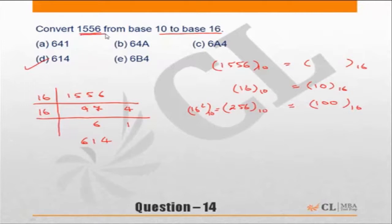This number 1556 is about 6 times 256. If you look at the choices, all choices start with 6. So 256 times 6 on base 10 should be 6 times 100 on base 16. In other words, 256 times 6—250 times 6 is 1500, 6 times 6 is 36—so 1536 base 10 equals 600 base 16.